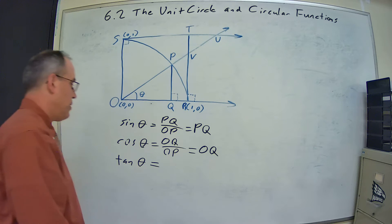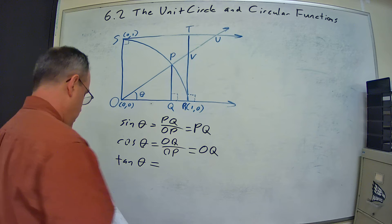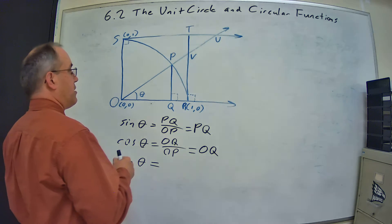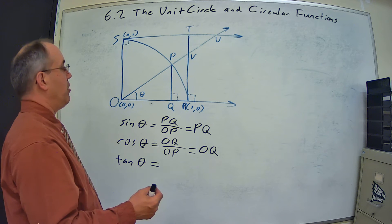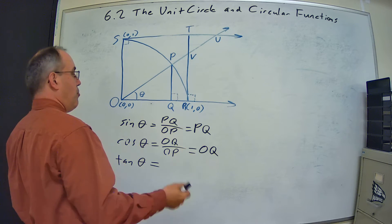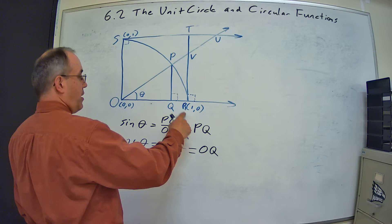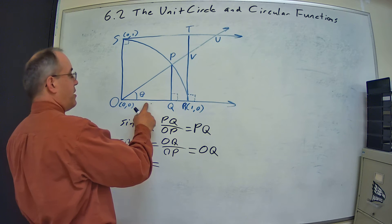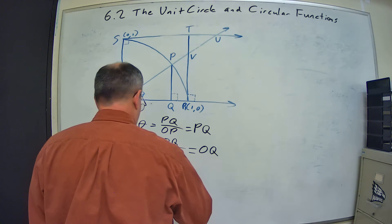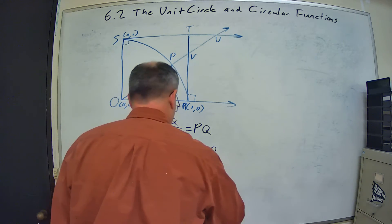For tangent of theta, we could say that's sine over cosine, so PQ over OQ, but that's a ratio of sides. I want to get this down to one side. Tangent is opposite over adjacent, so I'd like to find a triangle where the adjacent side equals one. From O to R is one because that's on the unit circle arc, and that's adjacent. So RV is opposite, giving us RV over OR. OR equals one, so tangent of theta is the length RV.